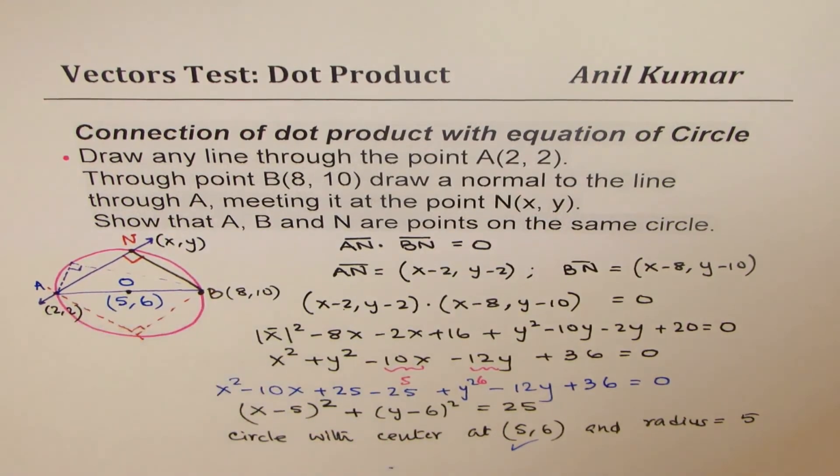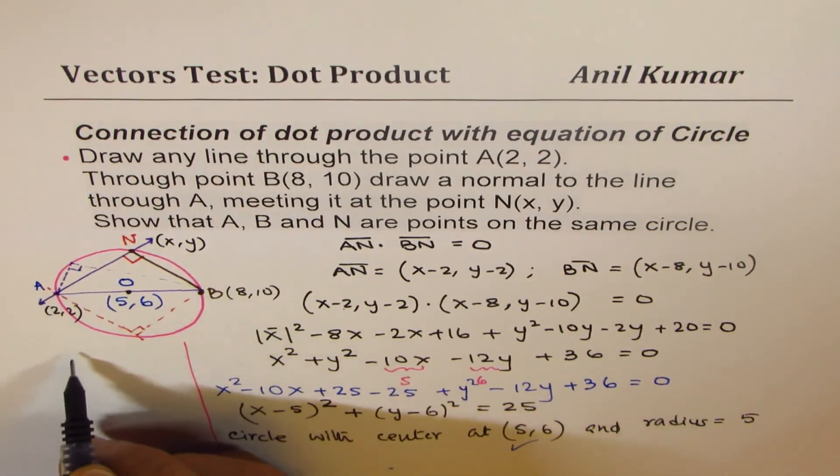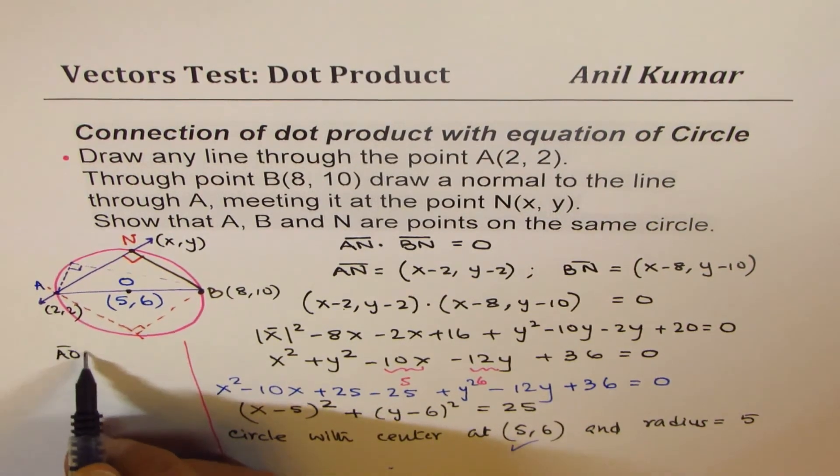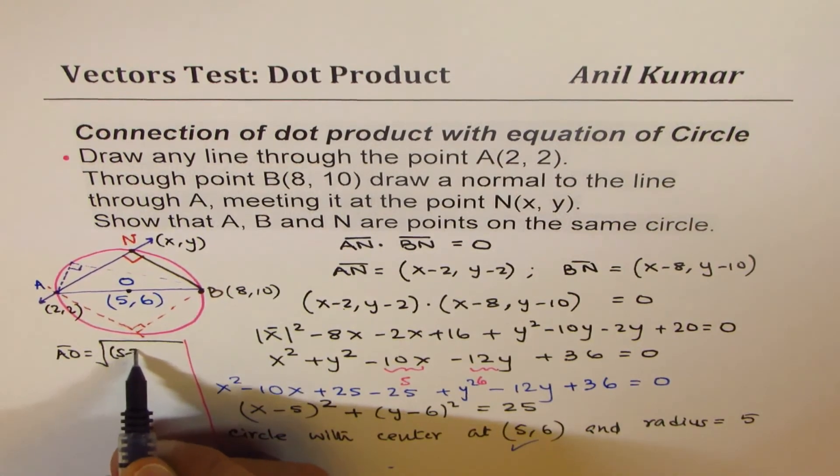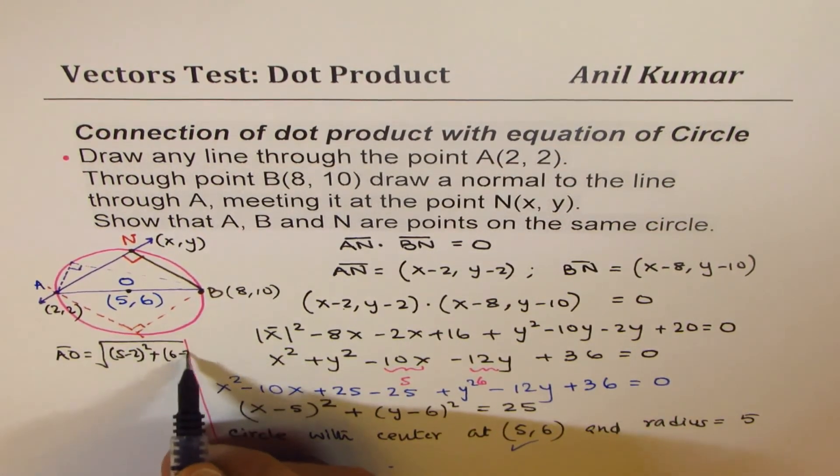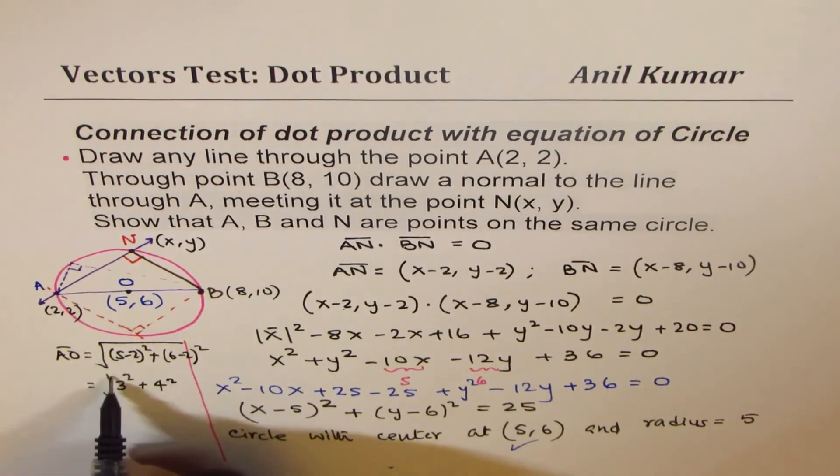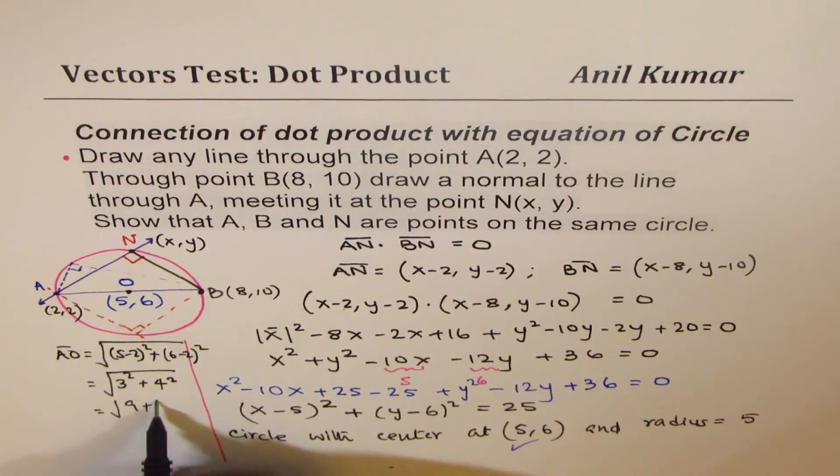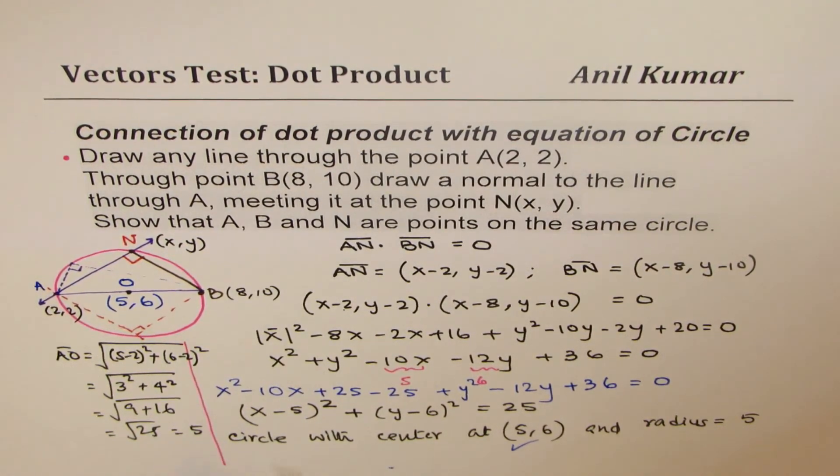And you can find the radius. You can calculate what is the magnitude of AO. So the magnitude of AO will be square root of (5 minus 2) whole square plus (6 minus 2) whole square. Which is square root of 3 squared plus 4 squared, which is square root of 9 plus 16, which is square root of 25, which is positive 5. So we do have a circle with center 5, 6 and radius of 5.